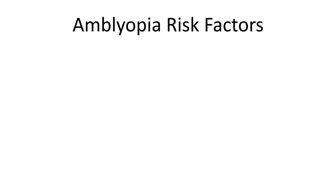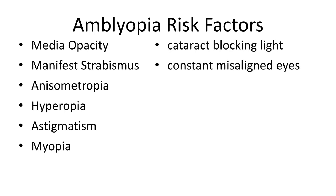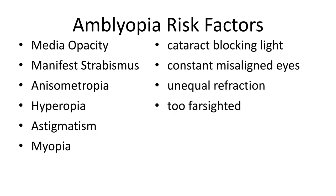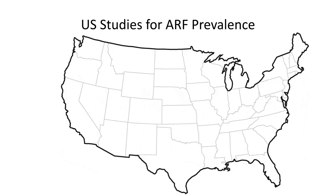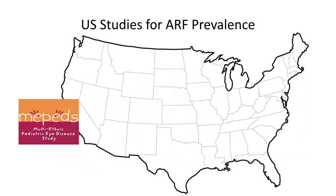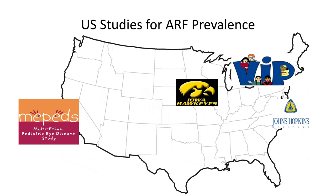David Silbert coined the term amblyopia risk factors, which include cataracts, strabismus, and refractive errors. The cataracts block light and strabismus misaligns the eye, while refractive errors cause blurred images. These are areas where large, taxpayer-funded studies have done complete examinations on children in California, in multiple optometric schools, in the Baltimore area, and excellent studies from Iowa.